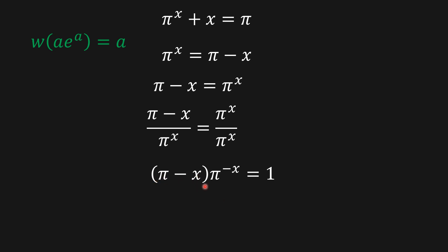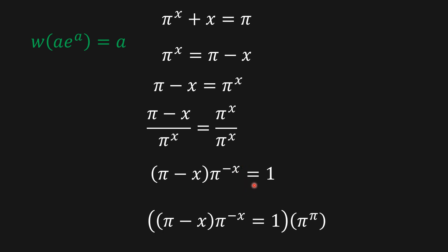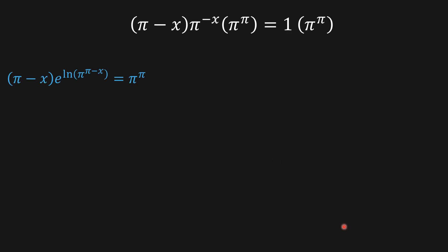I'm trying to get to π to the power (π minus x). To do that I need to multiply by π to the π and divide by π to the π, but to simplify I'll just multiply both sides by π to the π.